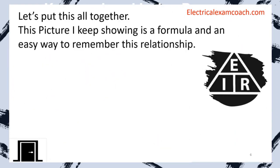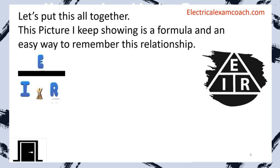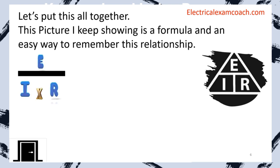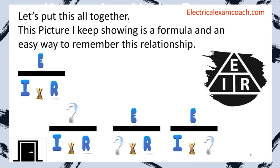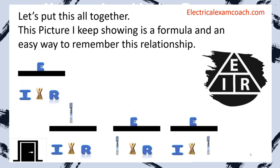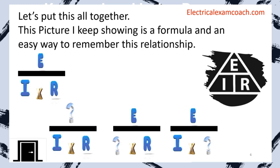Let's put this all together. The picture I keep showing you is a formula and it's an easy way to remember this relationship. We have E on top of a division line, and down below it is I and R — implied multiplication. As long as we know any two of the three, we can always find the unknown. All the math in this program is sixth grade math. If I know I and R, I can just multiply. If I know E and R, I can just divide to find I. If I know I and E, I can just divide to find R.